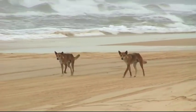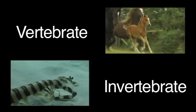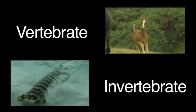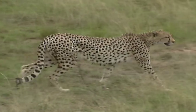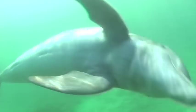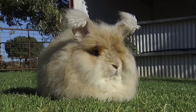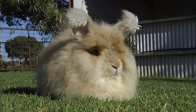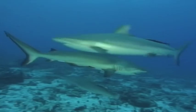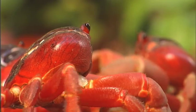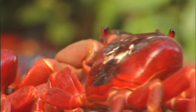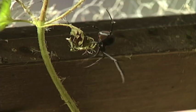Animals can also be classified as vertebrates or invertebrates. A vertebrate is an animal that has a backbone or a spinal column. Crocodiles, dolphins, rabbits, sharks and eagles are all vertebrates.